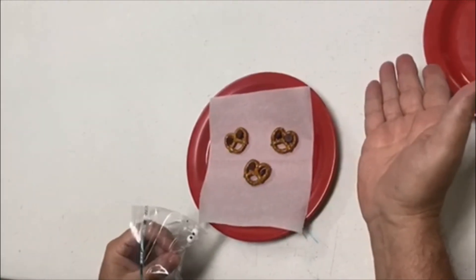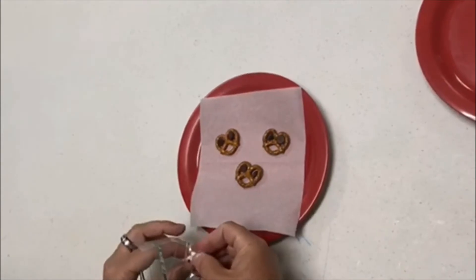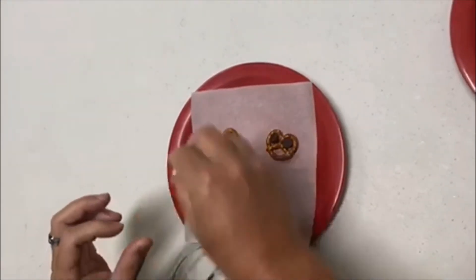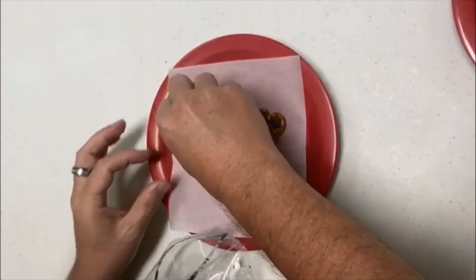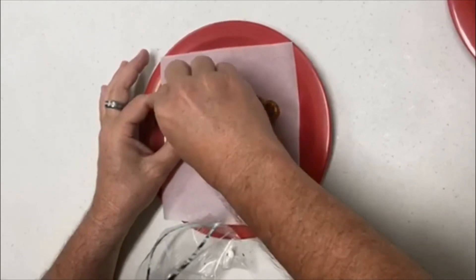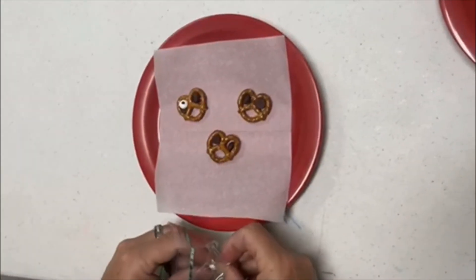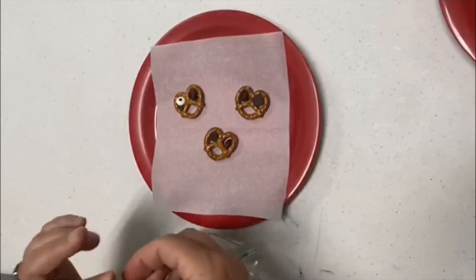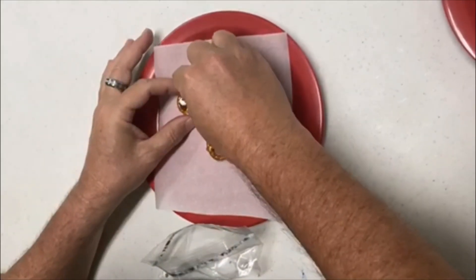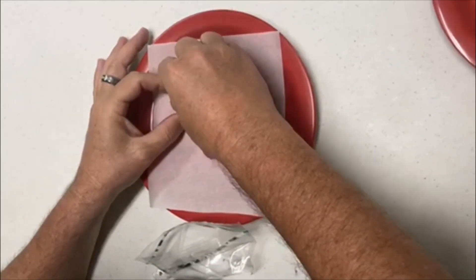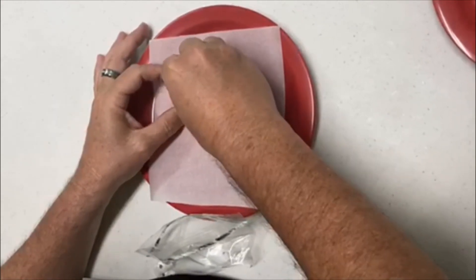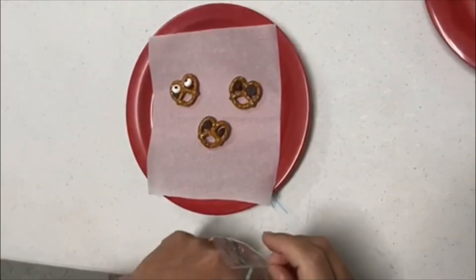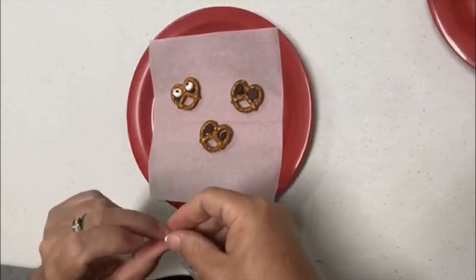Okay, I just pulled these out of the microwave. And now you're going to take your little eyeballs that are in your packet and you're going to press it in to the melted chocolate. You can put it right on top of the chocolate. The chocolate is the glue that holds the eyeball in.